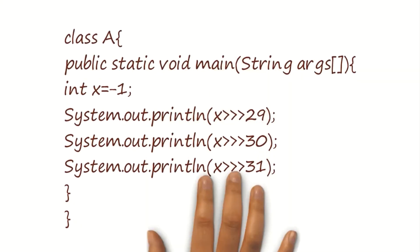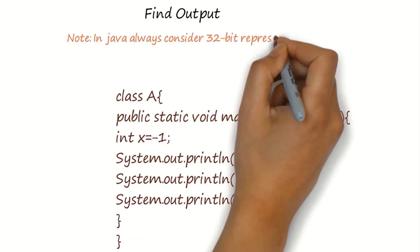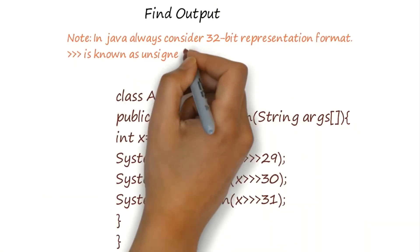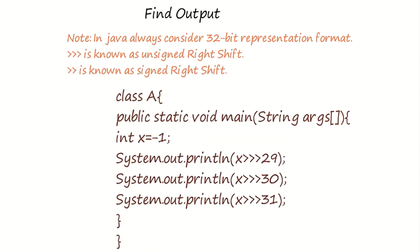Now try to find out the output of this Java code. Note that Java will use 32-bit representation for representing integers, and in Java logical right shift is known as unsigned right shift, while arithmetic right shift is known as signed right shift.